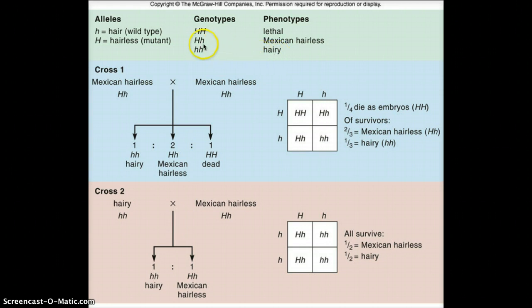And here we have one dominant allele and one recessive. So this is the heterozygote. So the outcome, or the phenotype, is a Mexican hairless dog.